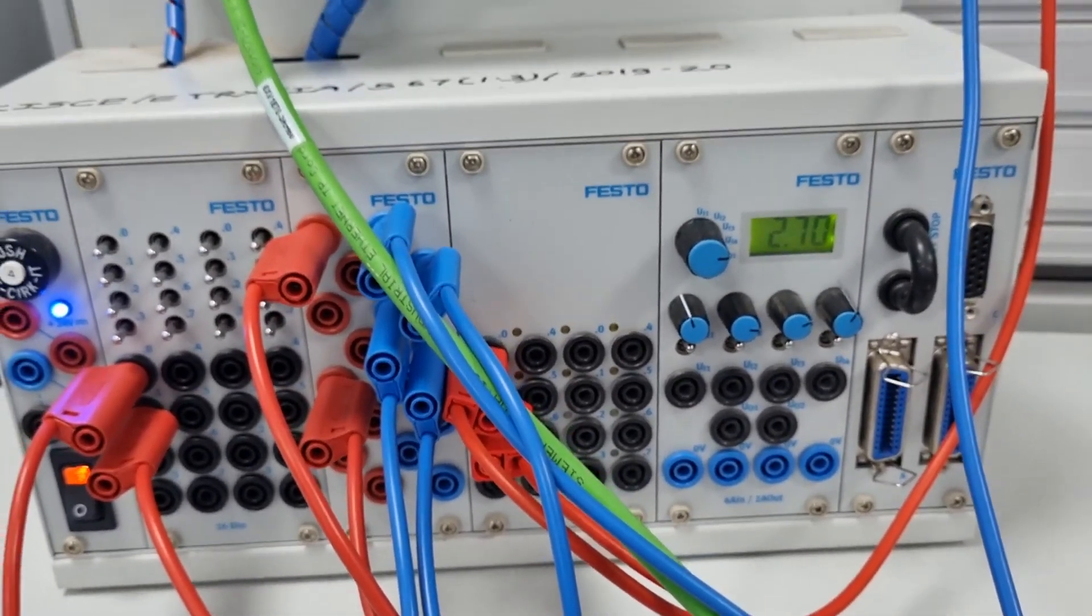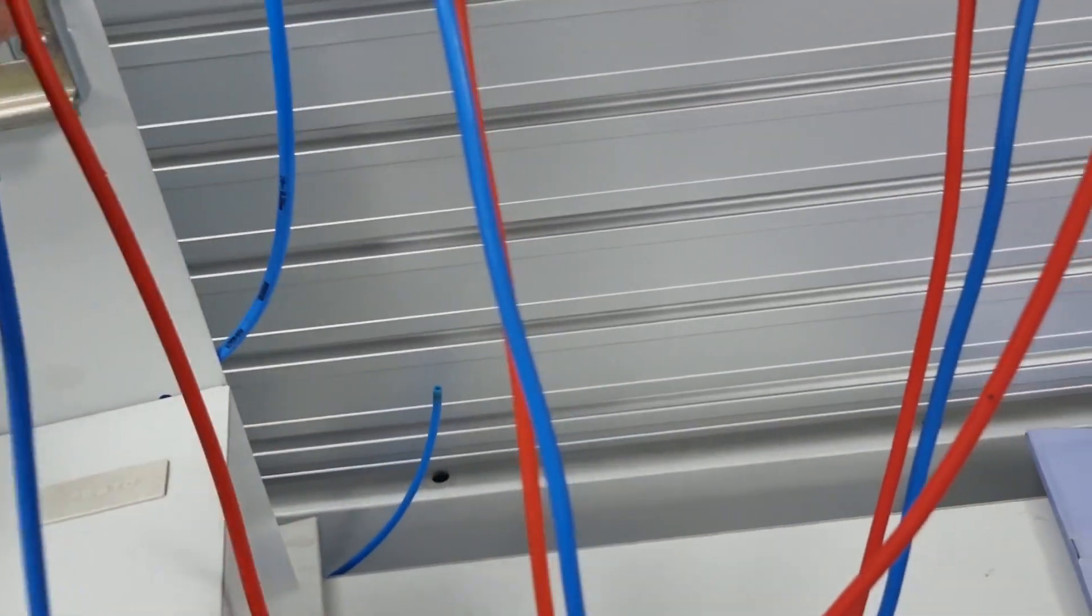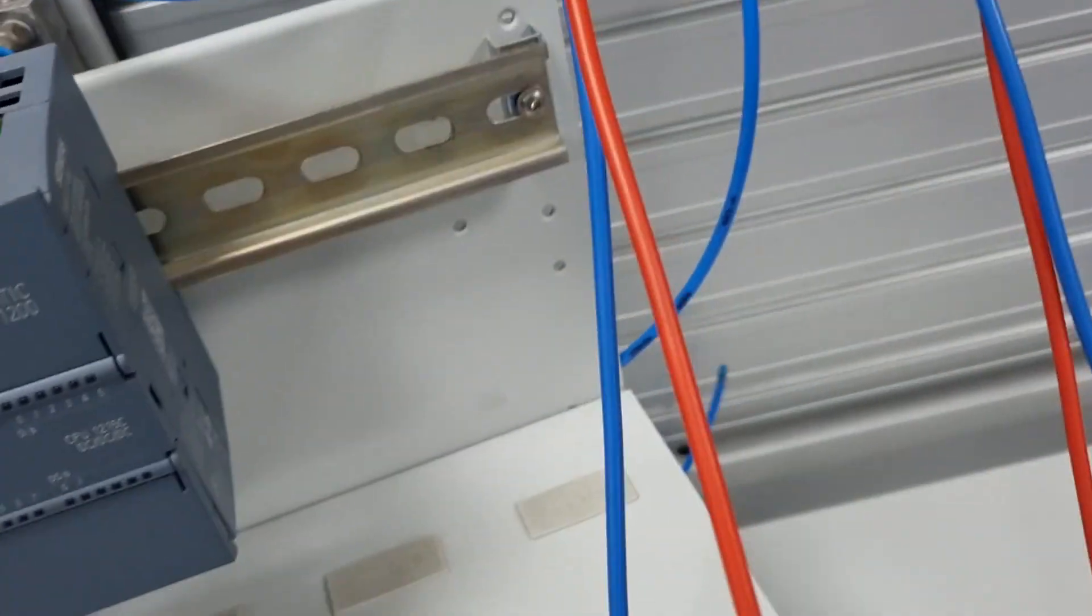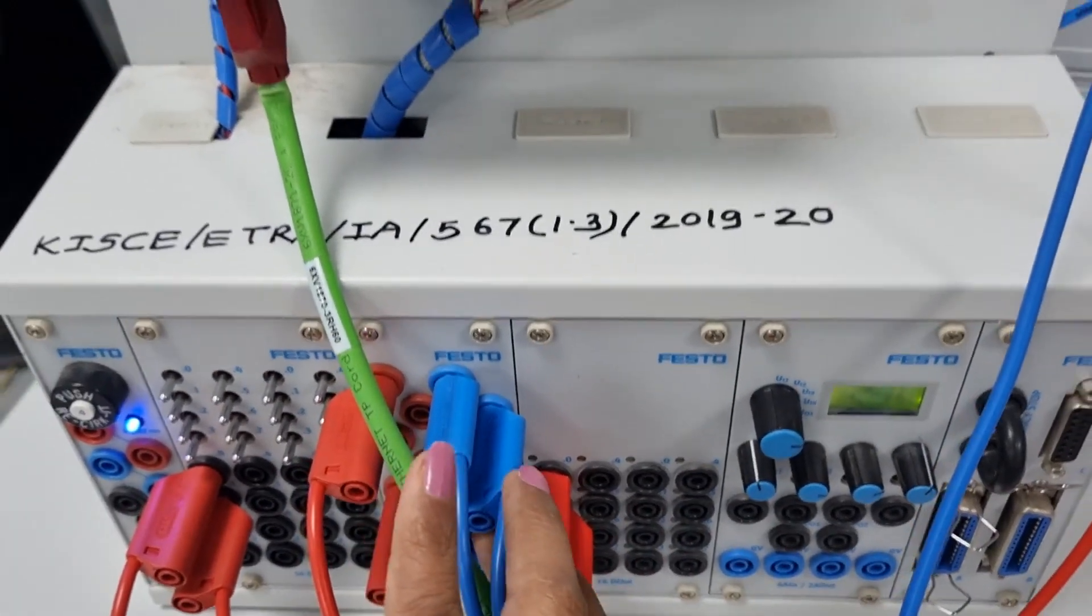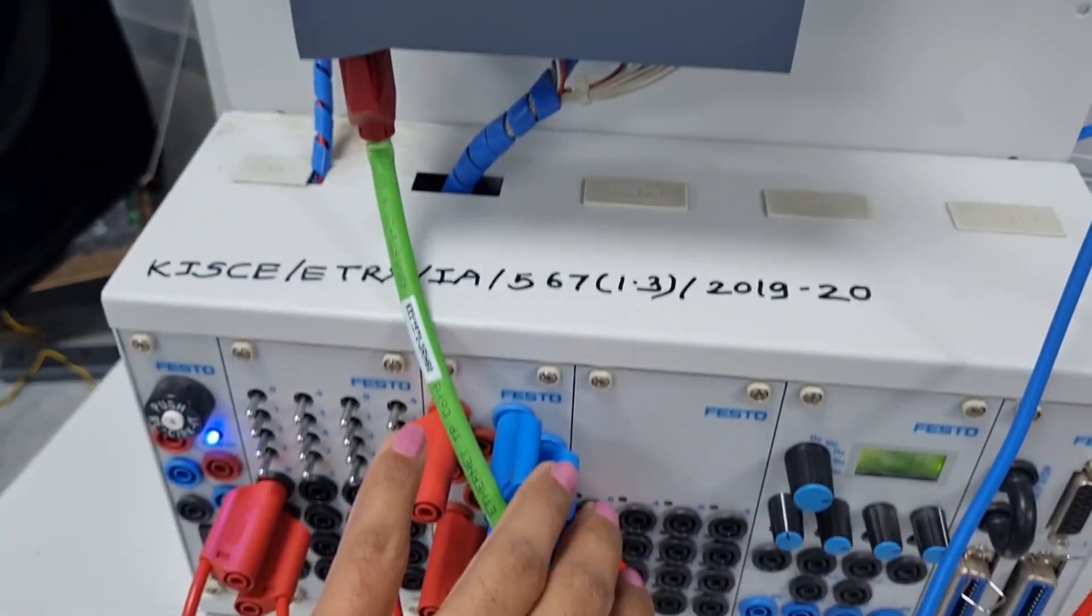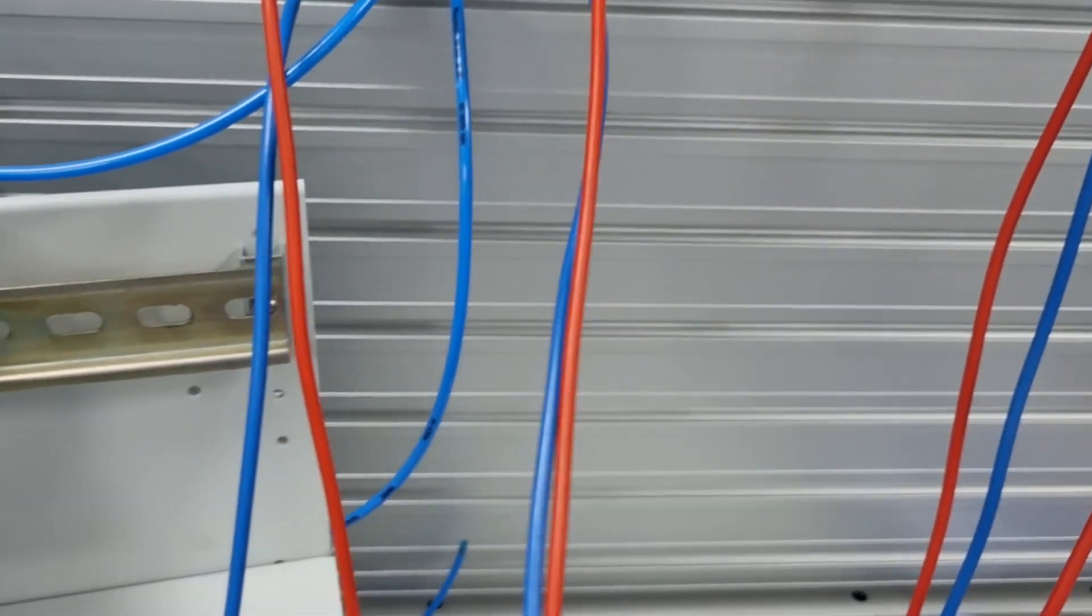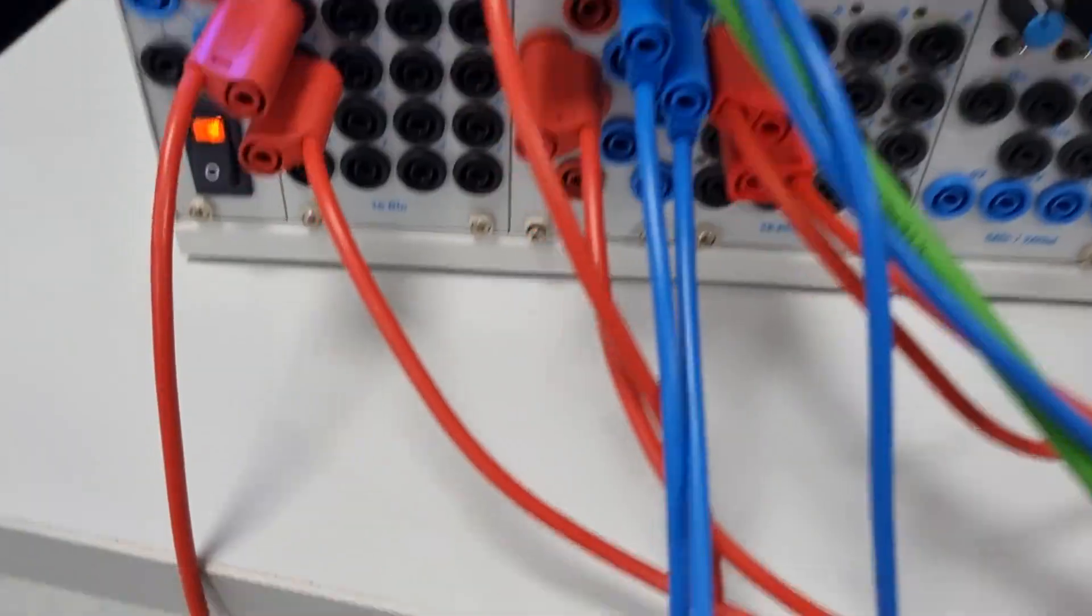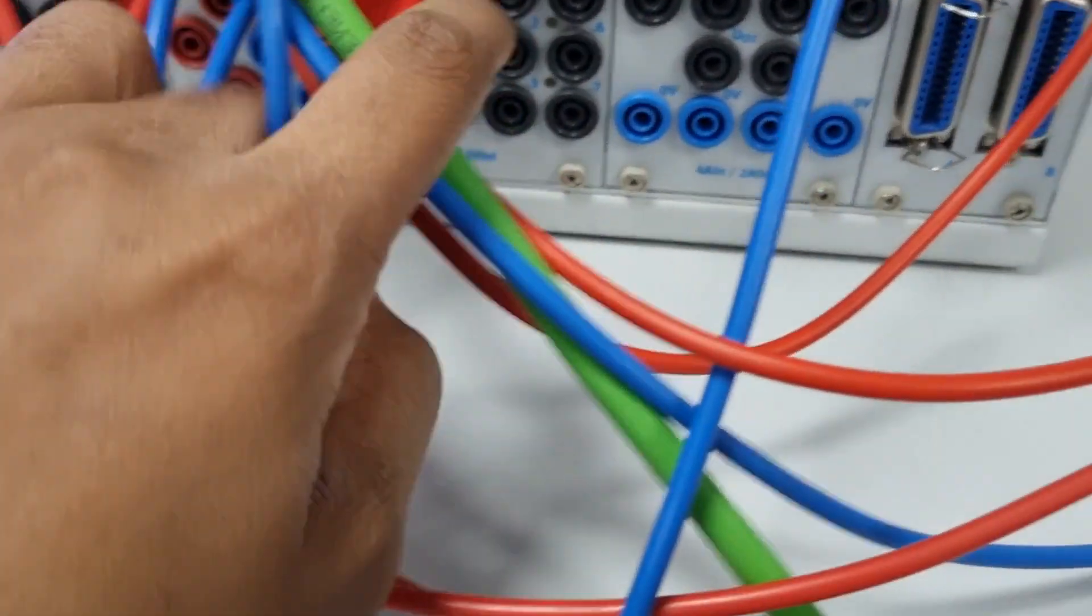Then we have connected this solenoid valve Q0.0 to Q0.0 of our PLC, and the other end is connected to this side. Q0.1, the second point.